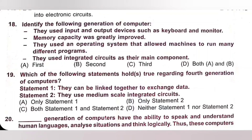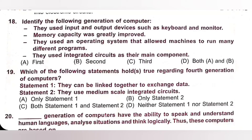Question 18: Identify the following generation of computers: They used input and output devices such as keyboard and monitor; memory capacity was greatly improved; they used an operating system that allowed machines to run many different programs; and they used integrated circuits as the main component. As discussed, integrated circuits were used by third generation computers. Option C — Third generation — is the correct answer.